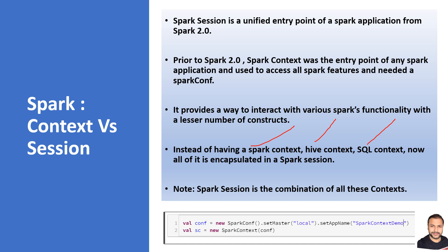Just a quick note: previously, you would create a Spark context and pass in a configuration object, in which you set all properties like the master URL and app name. That configuration is tied up with that Spark context, and for one application run you had one Spark context object available — one Spark context for one Spark application run, with one set of configuration tied to it.